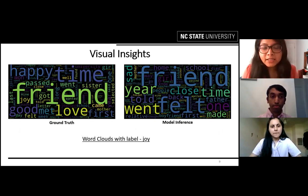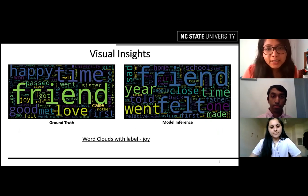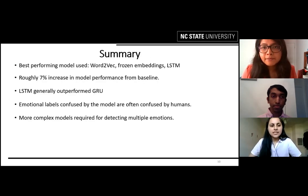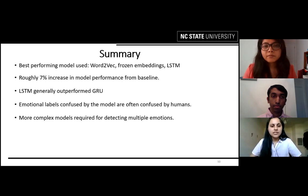Here we have a very interesting visual insight in the form of a word cloud. In the first word cloud, we can see words represented from the test data based on the label joy, whereas in the second word cloud we see all test predictions made for the test sentences. Summarizing our analysis, the best performing model for text-based emotion recognition was CNN plus LSTM with Word2Vec frozen embeddings, with approximately 7% increase from the baseline. We observed that LSTM performed better than GRU in combination with CNN. The emotional labels were sometimes confused by the model; for example, sadness was confused with anger or guilt, which is also done by humans at times.